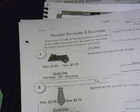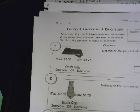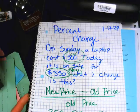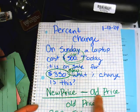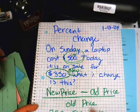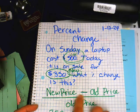Alright everybody, so we're going to continue with what we learned yesterday. It's one of those topics that we need to spend two days on. Review from yesterday: we did percent change, and we needed this formula here — new price minus old price divided by old price. What I told you yesterday is that you had to remember what number was on the bottom. That was the most important one.